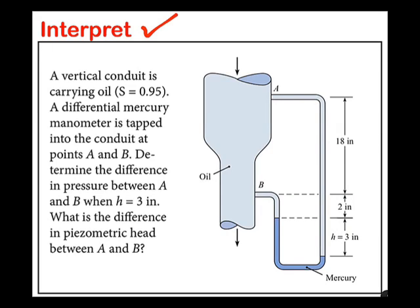I'll begin by interpreting the problem statement. A vertical conduit means a pipe that is oriented up and down as shown. The fluid is oil.